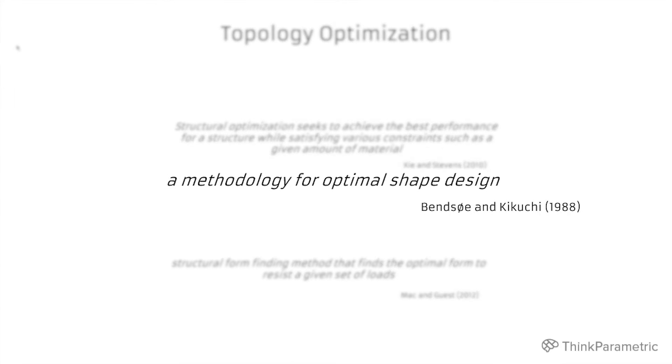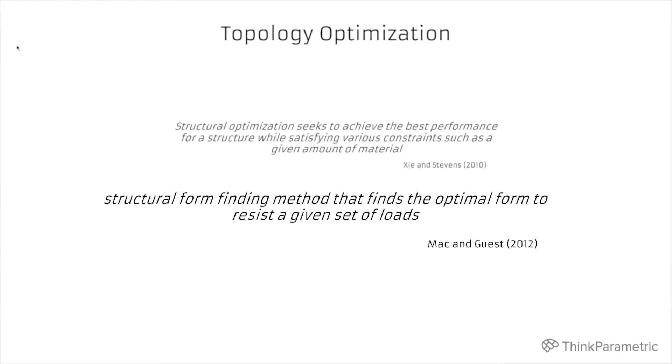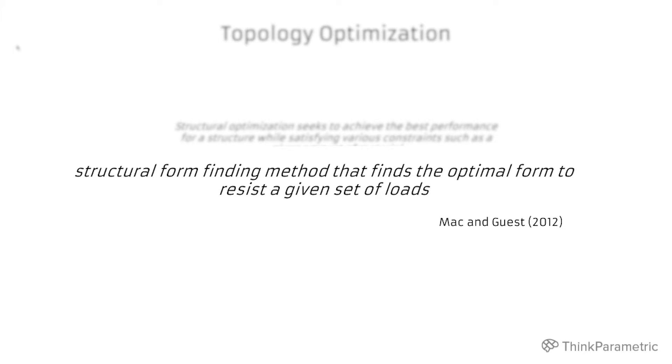The second definition: A methodology for optimal shape design. Usually we have some predefined design domain and within this design domain we try to find a shape. And the last definition stands for that topology optimization is also a structural form-finding method. It finds optimal form to resist a given set of loads.